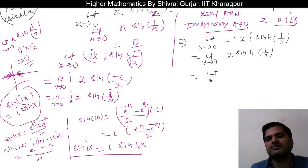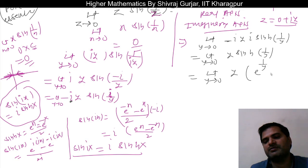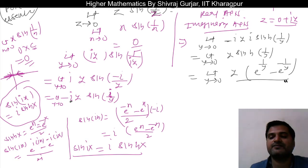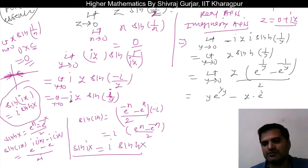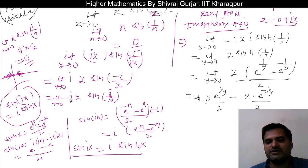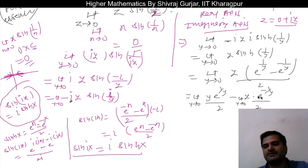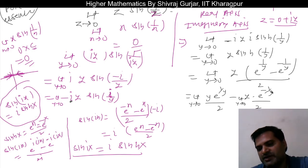This can be further written as limit y tends to 0 of [y·e^(1/y) - y·e^(-1/y)] / 2. For the second term, y·e^(-1/y) as y tends to 0 goes to 0 because e^(-1/y) → 0 faster. For the first term we have limit y tends to 0 of y·e^(1/y), which is a 0 × infinity form.